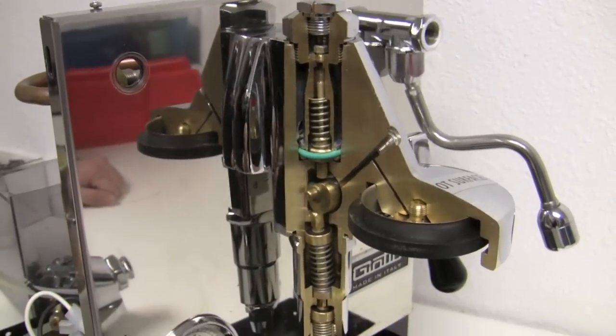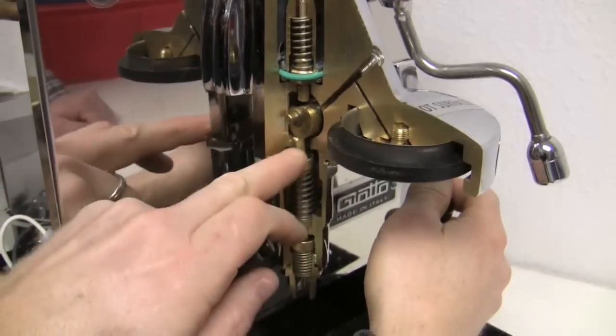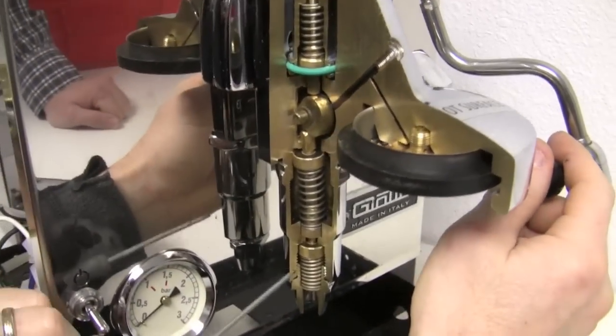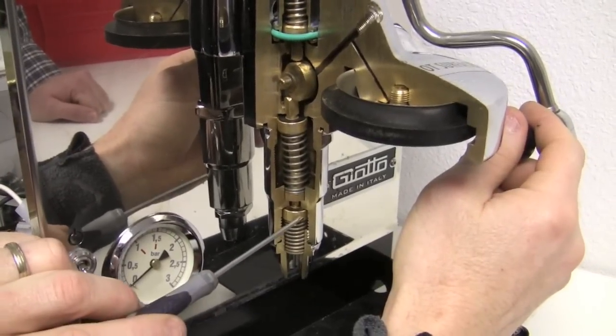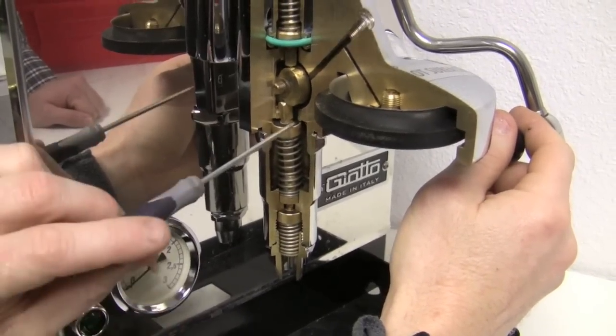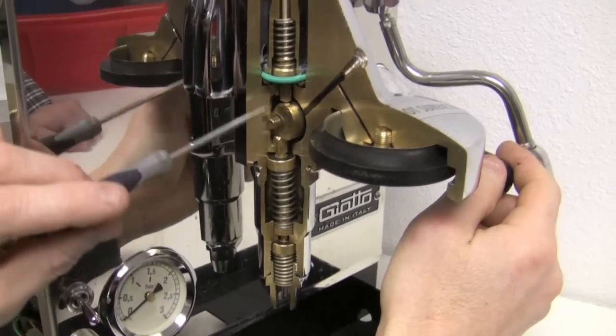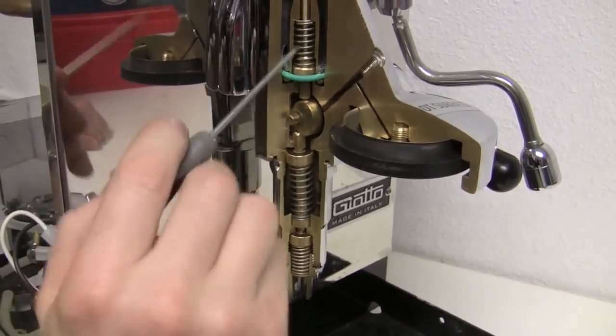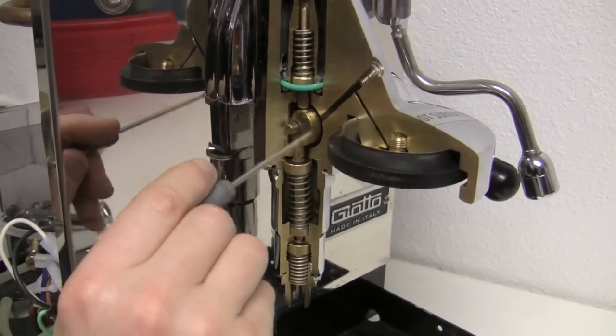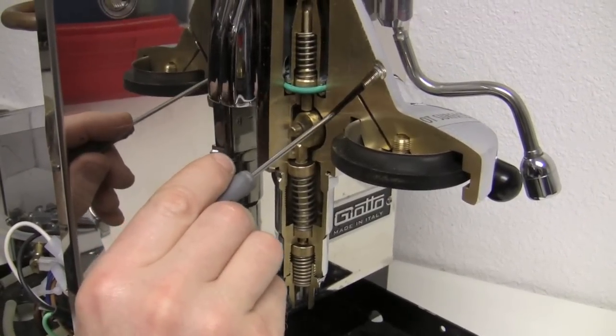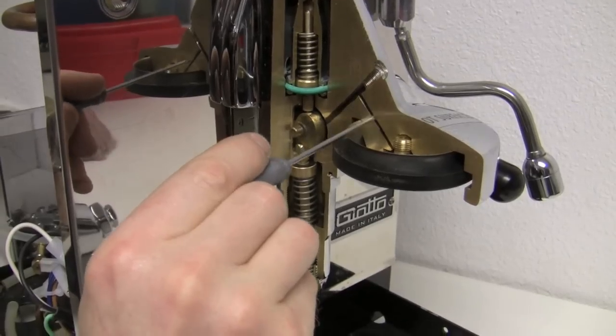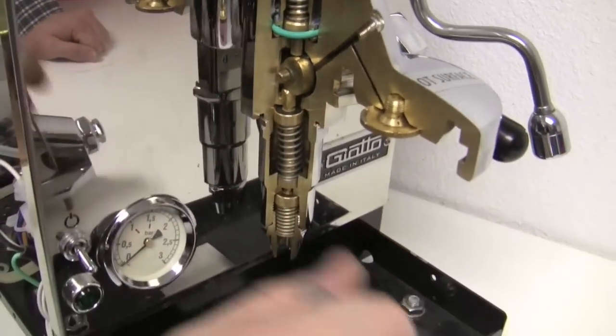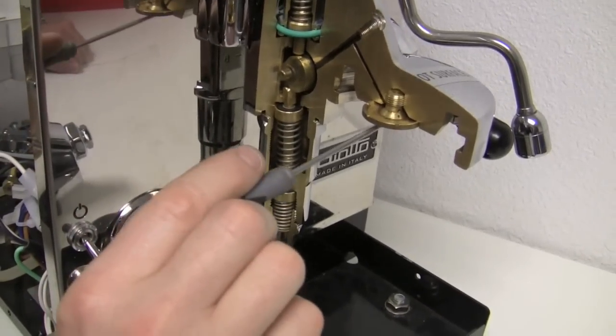Now when we put the E61 to the first position, I'll just hold this in place, we'll notice two things. One, that the exhaust valve will close along with this exhaust valve. There's two of them. And the brew valve will open. And what that does is allow water to come through this area, fill up this chamber, then go up this path down here and out into the coffee, which the portafilter would sit right here.